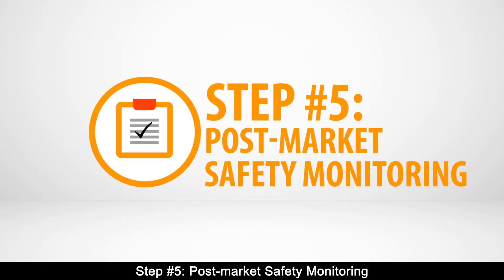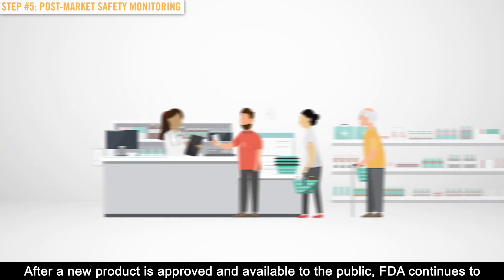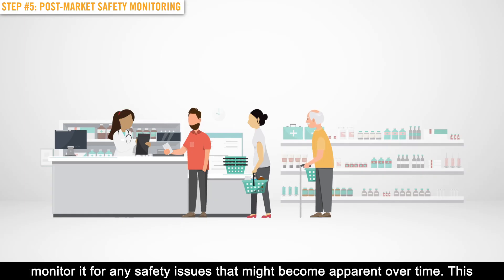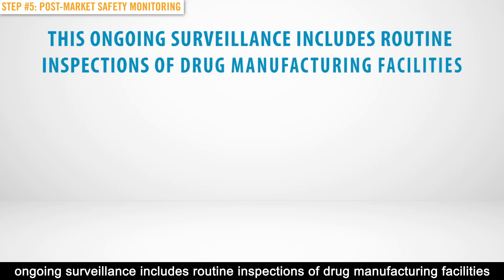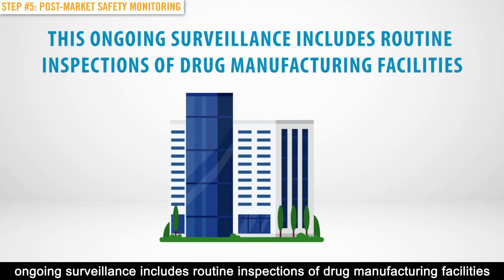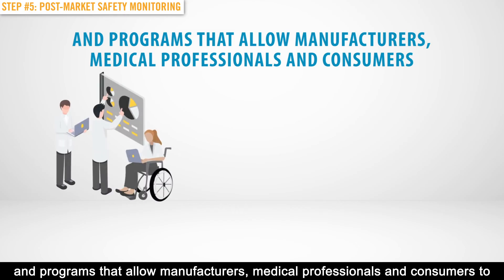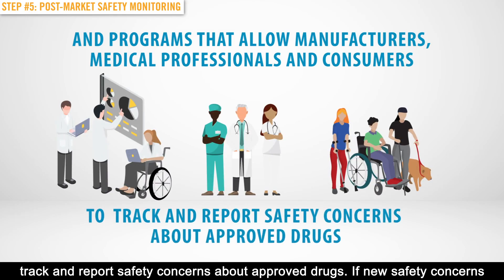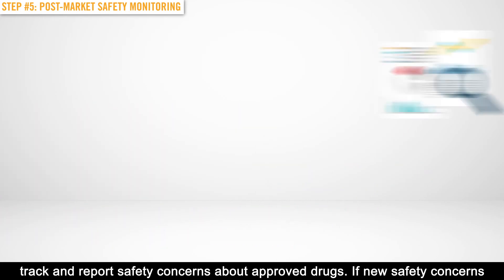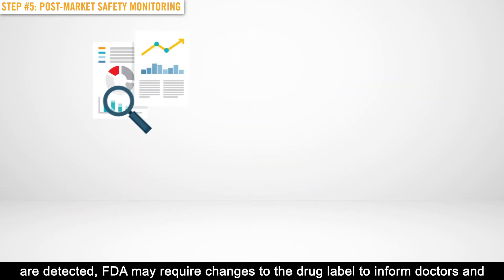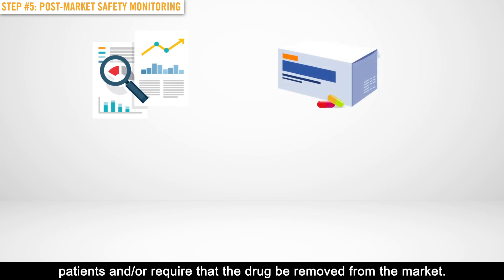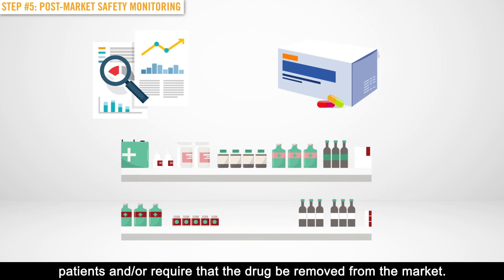Step number five: Post-market Safety Monitoring. After a new product is approved and available to the public, the FDA continues to monitor it for any safety issues that might become apparent over time. This ongoing surveillance includes routine inspections of drug manufacturing facilities and programs that allow manufacturers, medical professionals, and consumers to track and report safety concerns about approved drugs. If new safety concerns are detected, the FDA may require changes to the drug label to inform doctors and patients, and/or require that the drug be removed from the market.